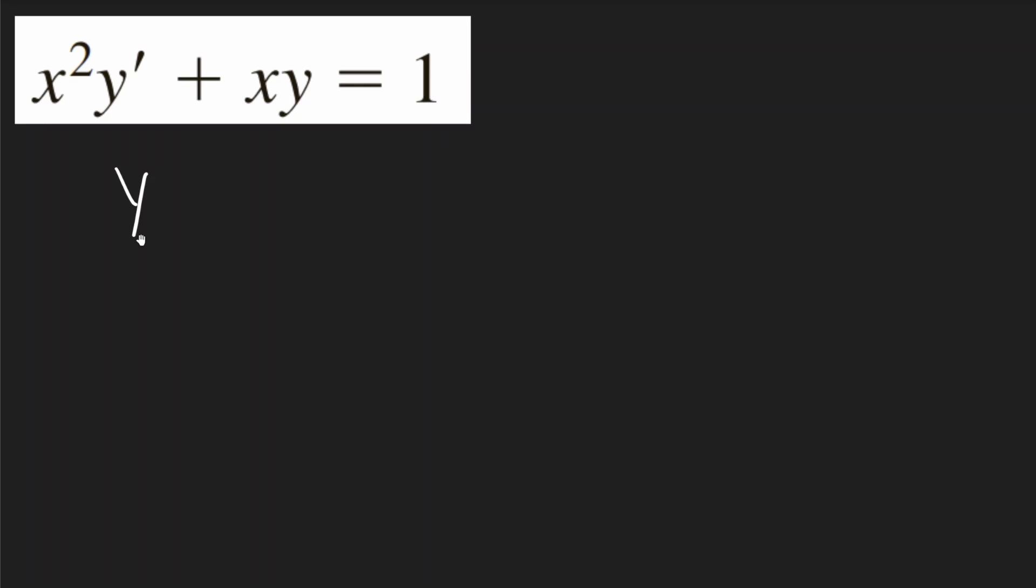In this problem, I'll start by getting this in the right form. The right form is y prime plus p of x times y equals q of x.